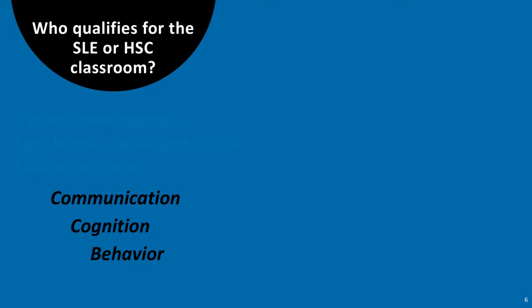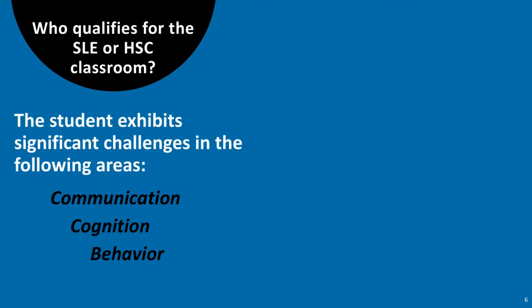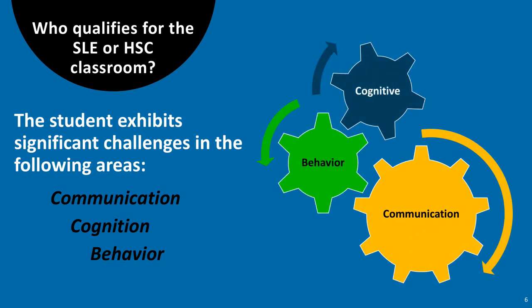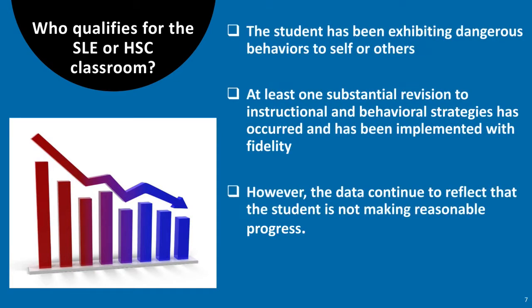The following slides will show the criteria needed for students to qualify for these settings. Students in these settings exhibit significant challenges in the areas of communication, cognition, and behavior. In the area of behavior, the student exhibits significant dangerous behavior to self or others. The ARD committee has revised instructional and behavioral strategies at least once and shown evidence that these changes have been implemented with fidelity. Despite these efforts, data show that the student is not making reasonable progress.